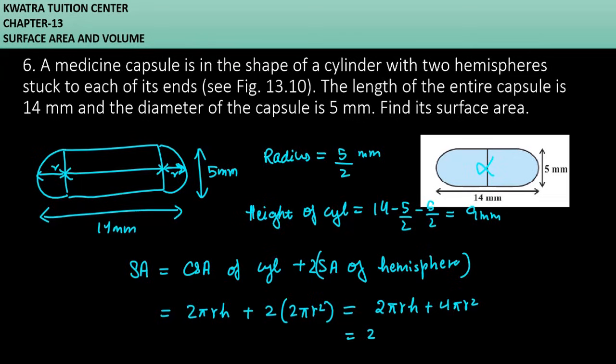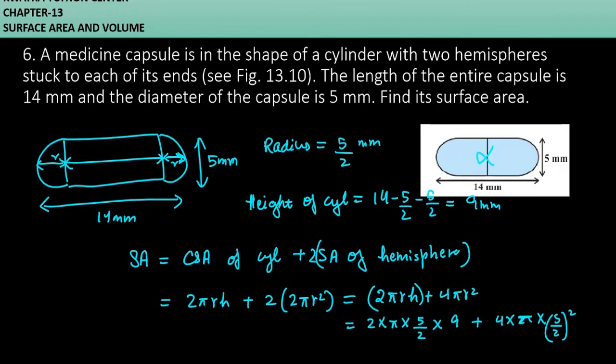First, we have 2π as it is. The r value is 5 by 2. For the height, we need to place the cylinder height here, so don't make the mistake of placing 14. It must be the height of the cylinder, which is 9. So we have 2π × 5/2 × 9 plus 4π × (5/2)².